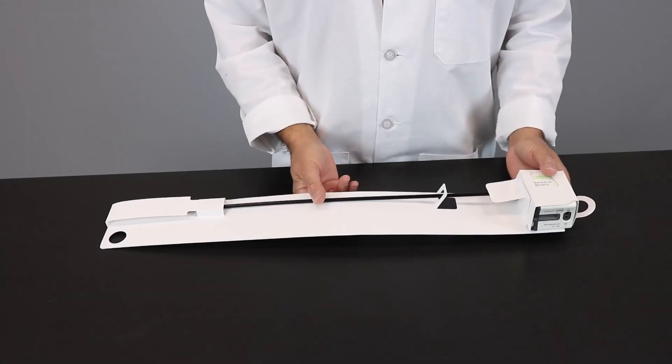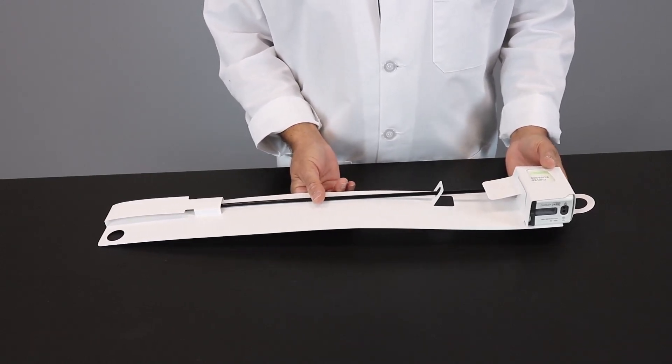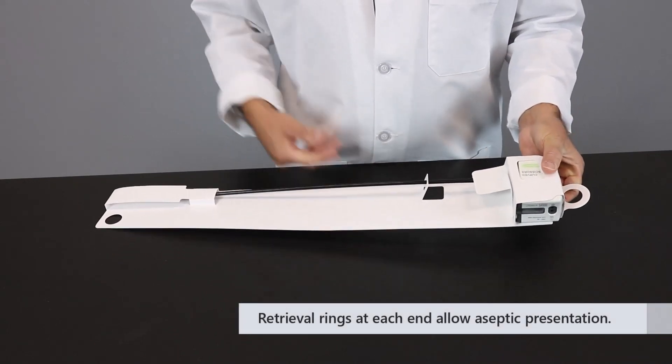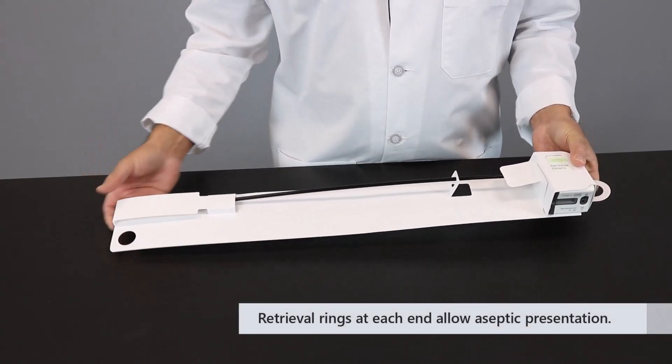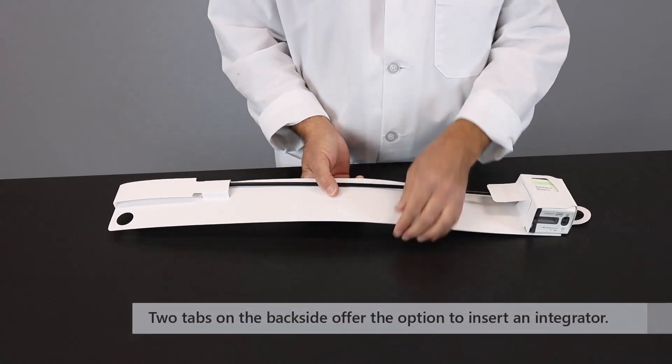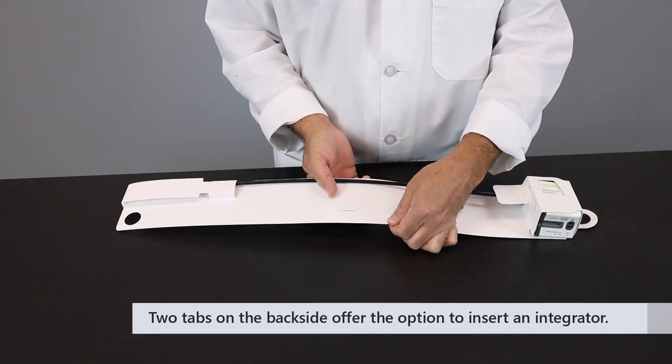Now that we've assembled the robotic instrument protector card, I want to mention a few features. The first one is the retrieval ring on the proximal end here, as well as the distal end here, which is used for aseptic presentation. I also want to show you this feature on the bottom where you can see two tabs where you place an integrator.